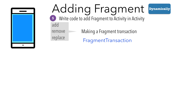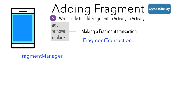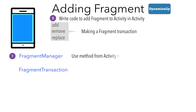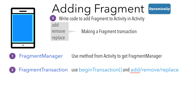To get hold of the Fragment Transaction, you will use another API called Fragment Manager. So it boils down to using these two APIs to carry out a fragment transaction. The first step is using the activity to get hold of the Fragment Manager, and then using the Fragment Manager to get hold of the Fragment Transaction. The beginTransaction method will get you the Fragment Transaction, which provides methods like add, remove, and replace. In this video, we will concentrate on only one transaction type, which is add.